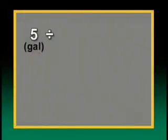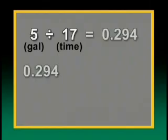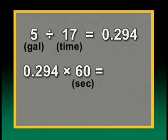Take the number of gallons and divide that by the number of seconds it took to fill the bucket. When you have that number, multiply it by 60 because there are 60 seconds in a minute.